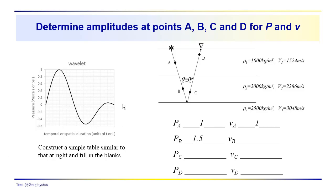Let's come back to this problem that we left you with. We have a wavelet generated by the source that propagates down through the subsurface. It's transmitted through the boundary between layers one and two, and reflected off the boundary between layers two and three. We have the densities and velocities given, and you had to calculate the pressure and particle velocity at points B, C, and D along the wave path. The pressure and velocity at A are arbitrarily set to one to make it simple.